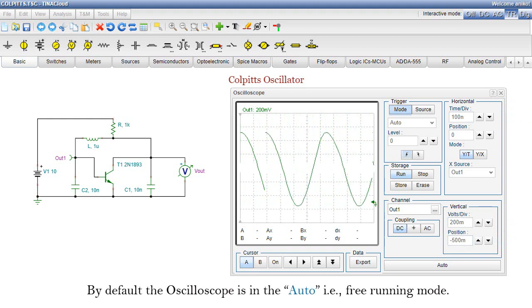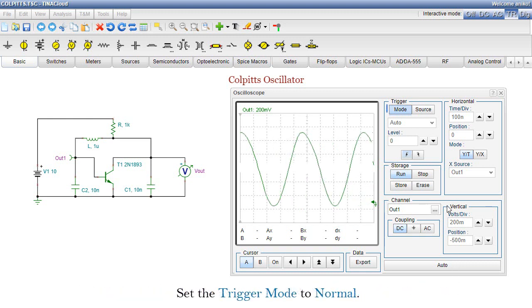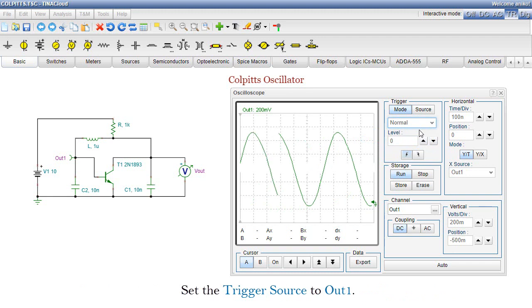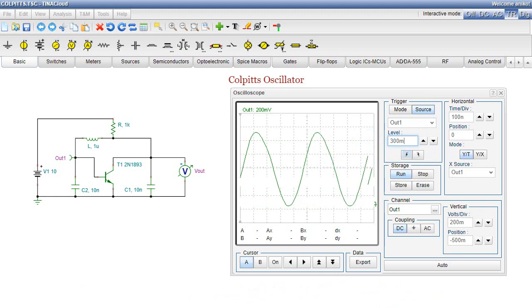By default, the oscilloscope is in the auto, i.e. free running mode. To get a steady state image, you should enable triggering as follows. Set the trigger mode to normal. Set the trigger source to OUT1. Set the trigger level to 300 millivolts. Consequently, the waveform is stabilized.